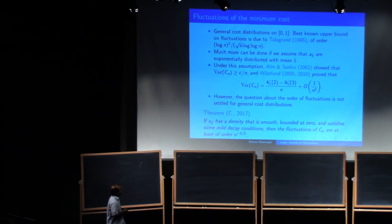However, this is actually an open question, this order of fluctuations for general cost distribution. So this is for general cost distributions, this is still the best-known bound. So what I proved is this, that if AIG has a density that is smooth, bounded at zero, and satisfies some mild-tail conditions, then the fluctuations of CN are at least of order 1 over root n. So this goes in the other direction.